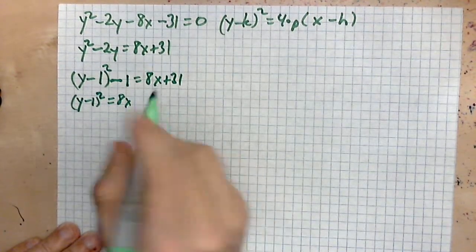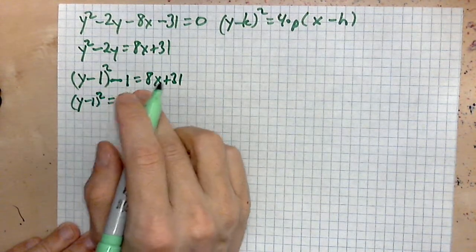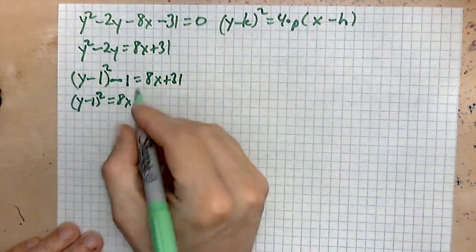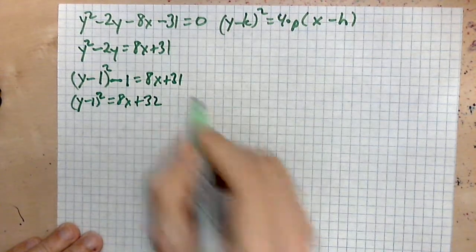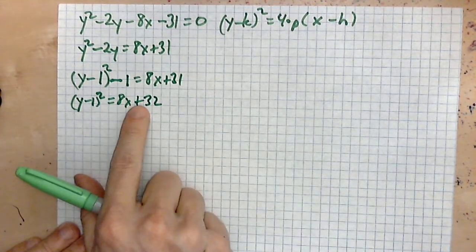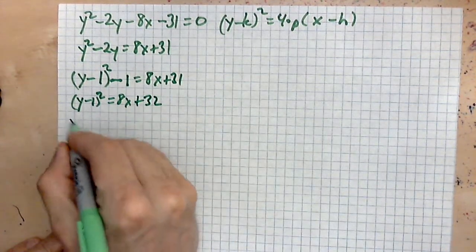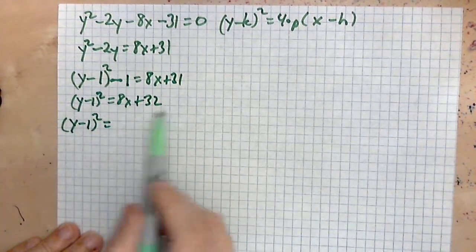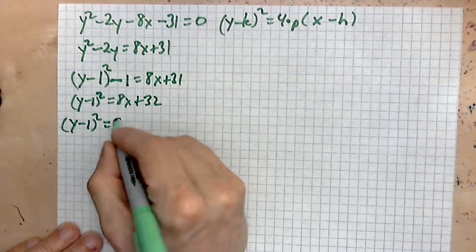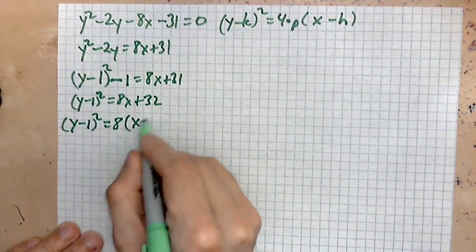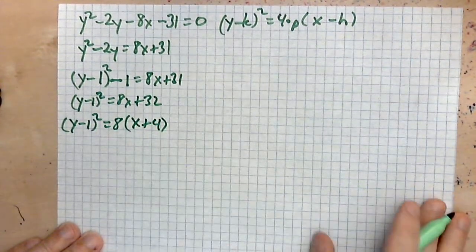8x, and then add positive one to both sides so you have positive 32. Then the 8x plus 32 can be factored into: pull 8 out, so what remains is x plus 4 like that.